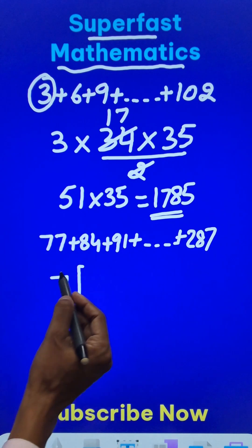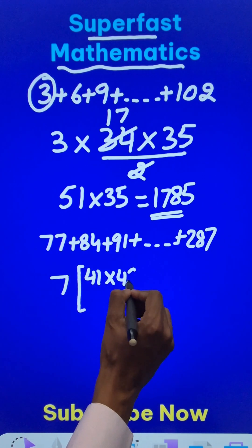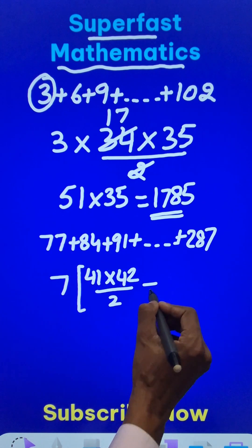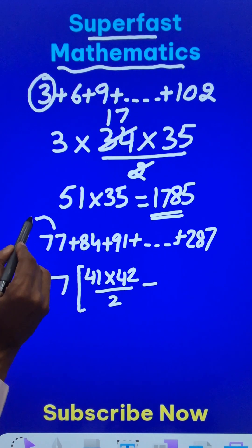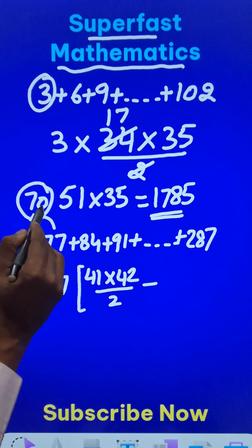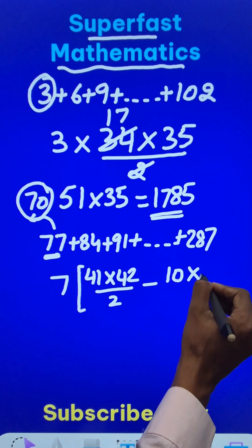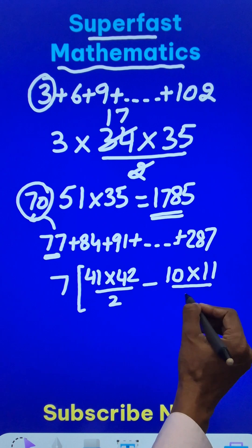If you divide 287 by 7, you get 41. So first write 41 into the next number 42 divided by 2. And now you need to subtract something from that, which is the previous multiple before 77, it is 70. And 70 means 70 divided by 7 is 10. So write 10, multiply it by its consecutive number 11 and divide it by 2.